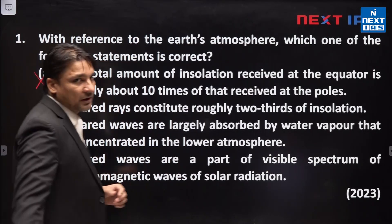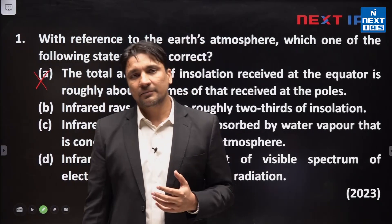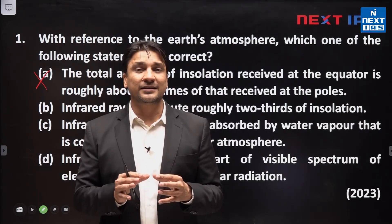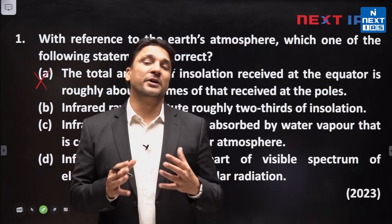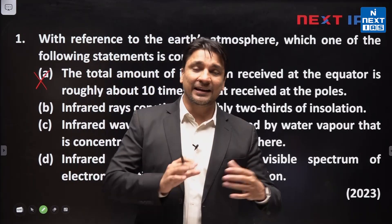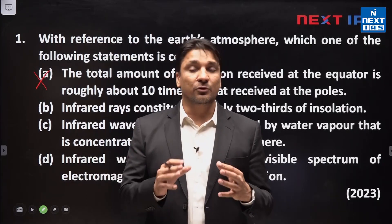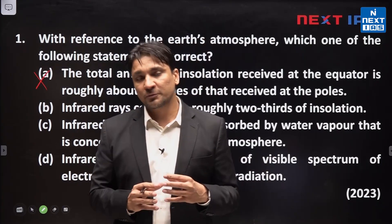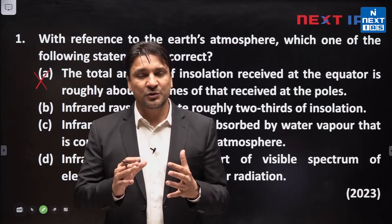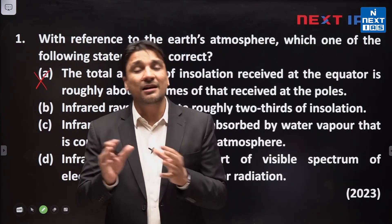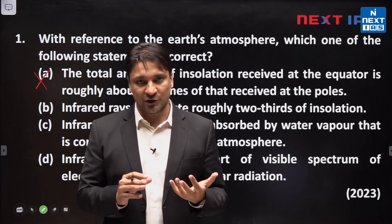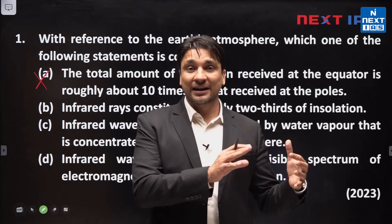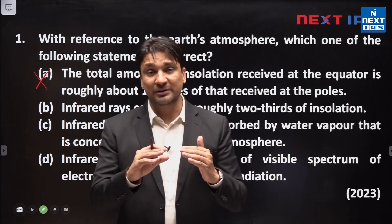Because at the equator the average insolation is around 330 watts per meter square, and in polar areas the average amount of insolation is around 70 watts per meter square. I am using the word 'average' because there is seasonal variation in insolation in polar areas. During summer, polar areas receive relatively higher insolation — more than 100 watts per meter square.